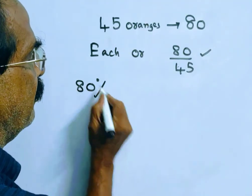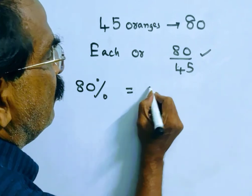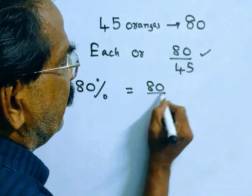So friends, 80% of the cost price is equal to 80 by 45.